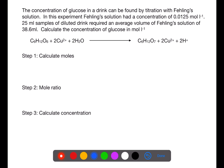In this example we're looking for the concentration of glucose in a drink. I've started by identifying all the information about glucose from the question. We have 25 ml samples of the diluted drink and have underlined the formula for glucose in the equation. In this experiment the glucose drink is titrated with Fehling's solution, which had a concentration of 0.0125 moles per litre — I've underlined this in red.